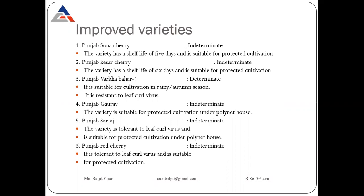Punjab Varkha Bahar Core is a determinate type variety, resistant to leaf curl virus, and suitable for cultivation in the rainy season. Punjab Gaurav is indeterminate type and suitable for protective cultivation under a pollinate house. Punjab Sartaj is indeterminate type, tolerant to leaf curl virus, and suitable for protective cultivation under a pollinate house.